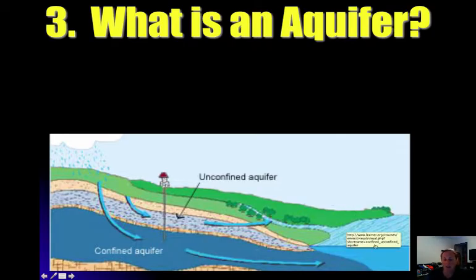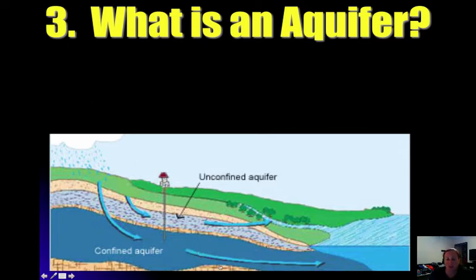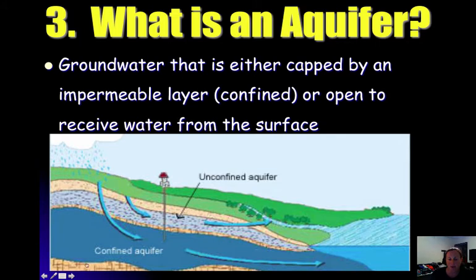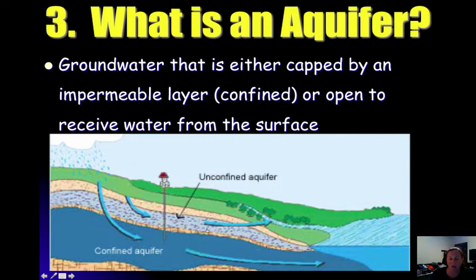An aquifer is a special groundwater situation. On Long Island, we have particular experience with aquifers since this is the type of groundwater we rely on. An aquifer is groundwater confined by an impermeable layer but open to receive water from the surface. On Long Island, we typically have a layer of clay that doesn't allow water to pass through easily, which confines the water and keeps it available for us to pump out.